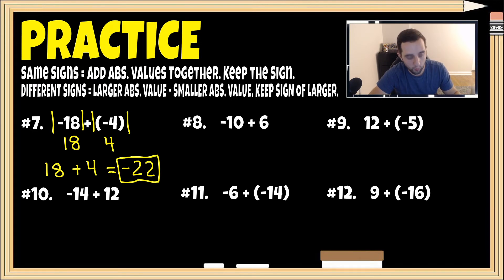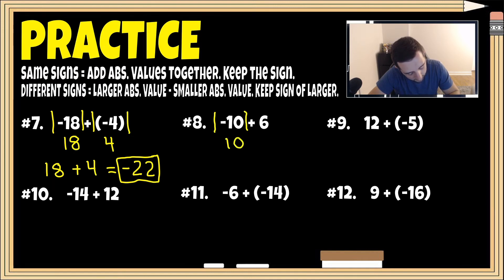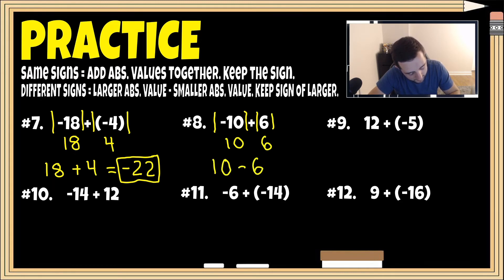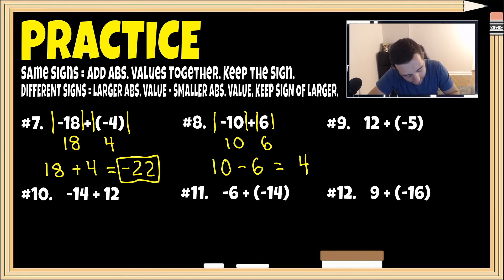For number eight, we have different signs. The absolute value of negative 10 is positive 10, and the absolute value of six is six. We subtract the smaller from the larger: 10 minus six gives us four. We keep the sign of the larger number — the original number was negative 10 — so our final answer is negative four.